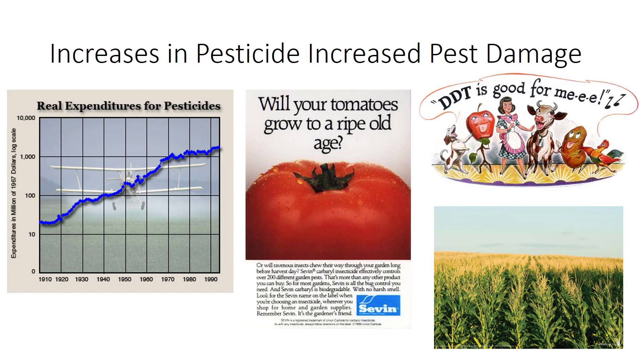Despite increased insecticide use, damage by insect pests has increased. For example, insecticide use in the United States increased tenfold from about 1950 to 1985, while the proportion of crops lost to insects roughly doubled, from 7% to 13% during the same period.